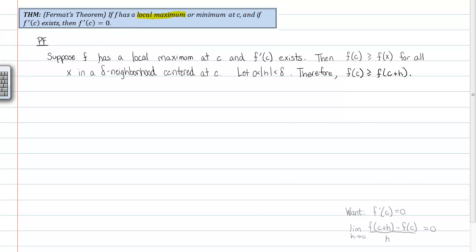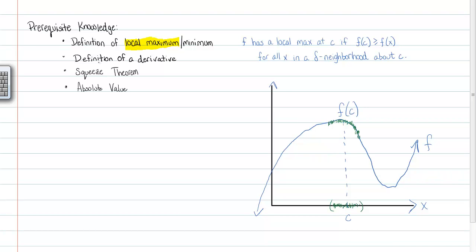Visually, looking at the exploded view of the graph: the value in red is c + h if h is positive. If h is negative, then c + h would be to the left. If h is positive you're wiggling to the right; if h is negative you're wiggling to the left — but still within the delta neighborhood. Therefore f(c + h) is still below f(c).